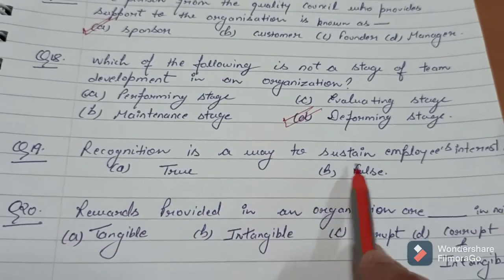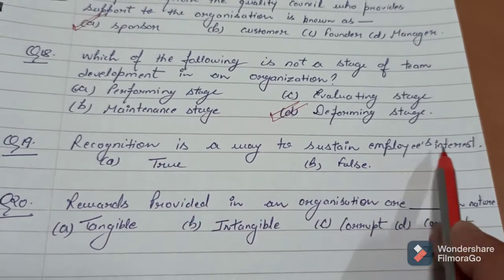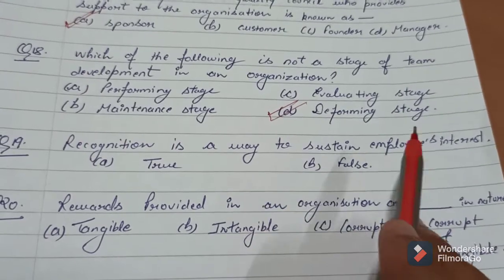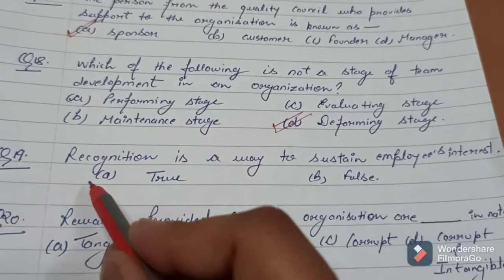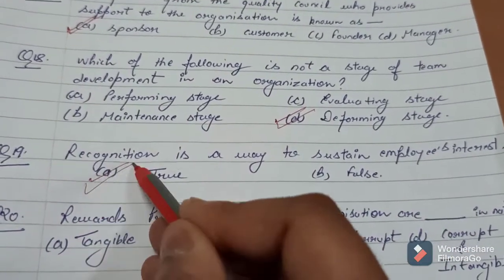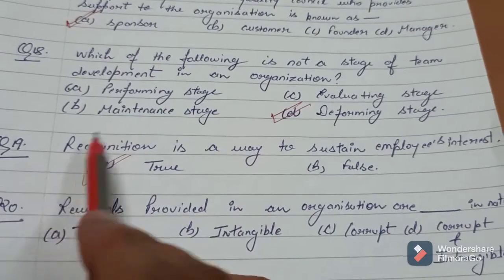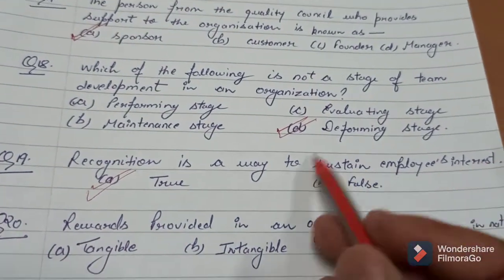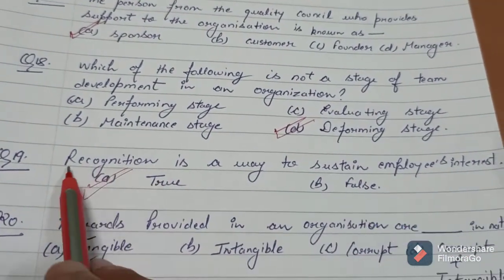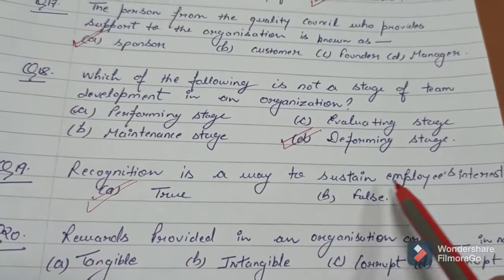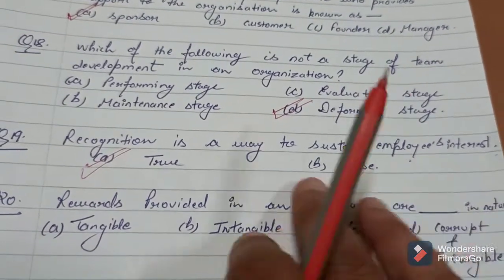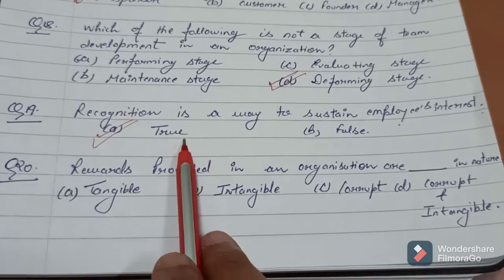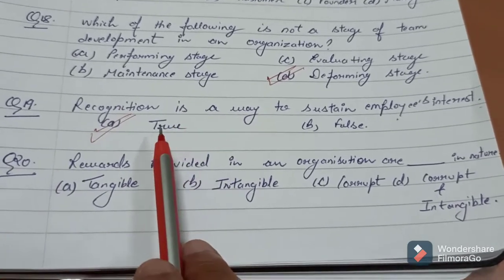Question number 19: Recognition is a way to sustain employees' interest — is this statement true or false? Obviously, this statement is true. Because when you recognize your employees, recognition is a way to sustain employees' interest. These are very simple questions but very effective questions.